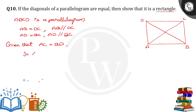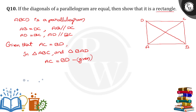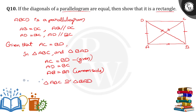First, I am going to consider triangle ABC and triangle BAD. In these two triangles: AC is equal to BD from the given data. AD is equal to BC, which we know from the parallelogram properties. And AB is equal to BA, which is the common side.